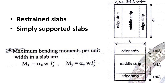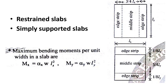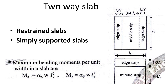For restrained slabs, there is no need to provide torsion reinforcement. For simply supported slabs, torsion reinforcement must be provided. When designing a two-way slab, the slab is divided into three parts in both the shorter and longer directions: edge strip, middle strip, and edge strip. Maximum moments are applied in the middle strip only, and tension reinforcement is provided only in the middle strip. It should be extended up to 0.25L for continuous slabs and 0.15L for discontinuous slabs.